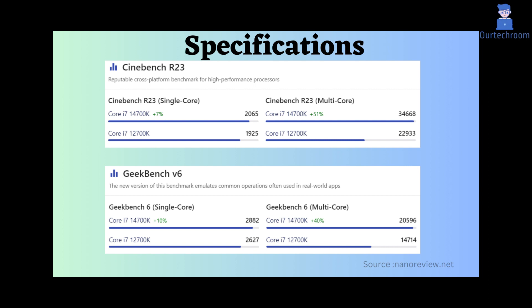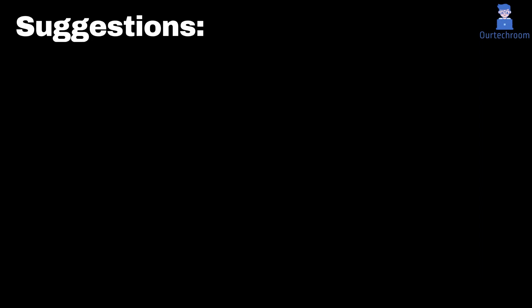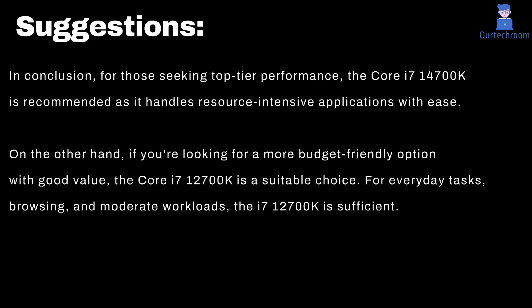In conclusion, for those seeking top-tier performance, the Core i7-14700K is recommended as it handles resource-intensive applications with ease. On the other hand, if you're looking for a more budget-friendly option with good value, the Core i7-12700K is a suitable choice. For everyday tasks, browsing, and moderate workloads, the i7-12700K is sufficient. Ultimately, the choice depends on individual preferences and performance requirements.